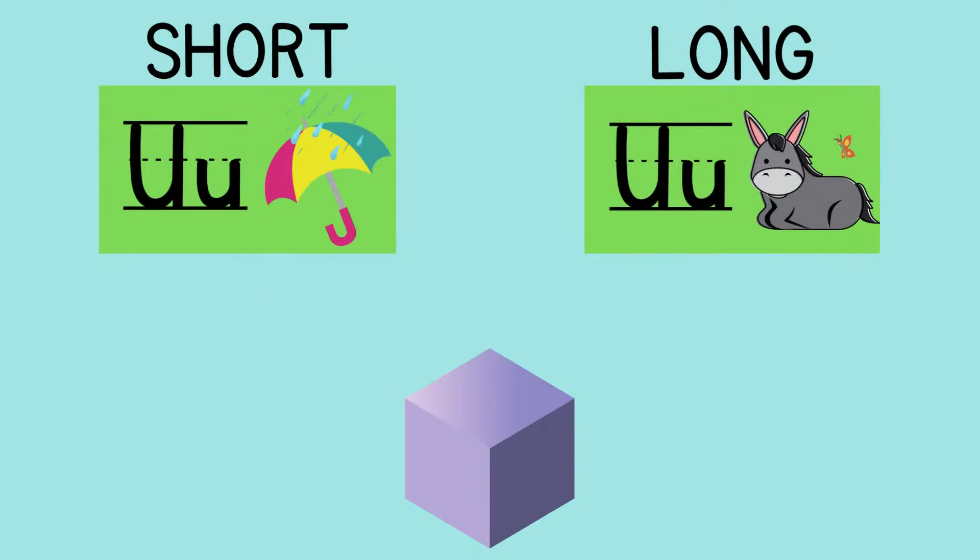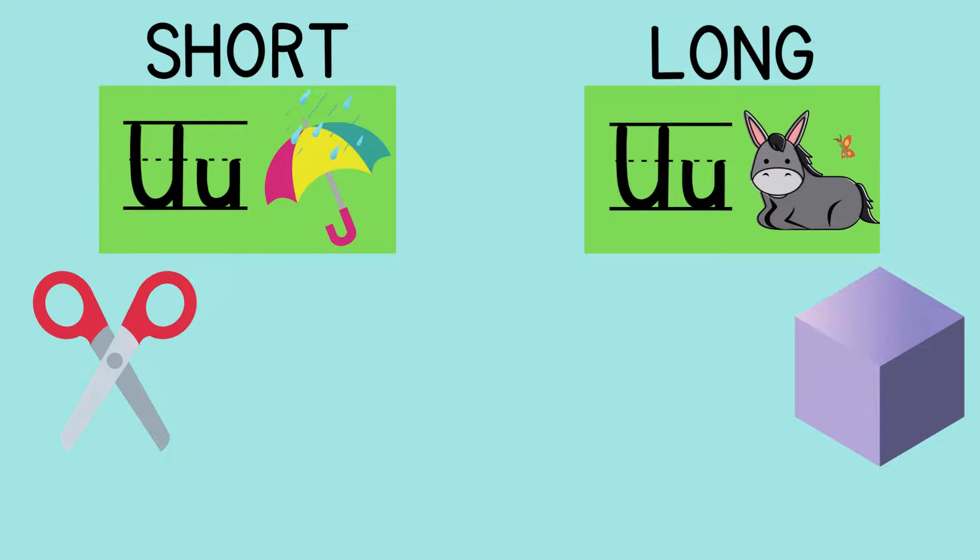First picture, cube - I hear 'ū' saying its name, that's a long vowel word. Cut - I'm hearing 'u', so that's short U.